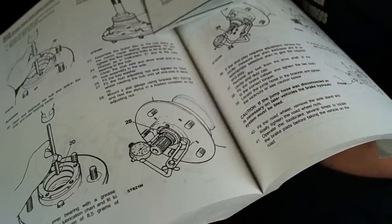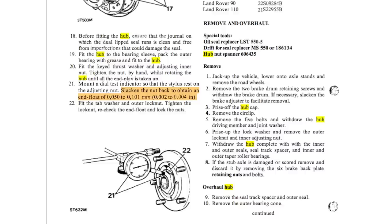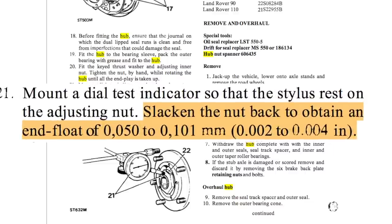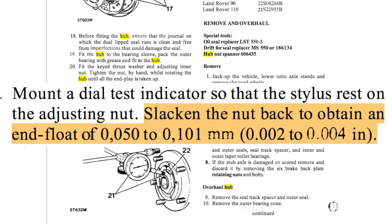What I'd like to make you aware of is the fact that there is development and things change for the ages. Item 21 says slacking back the nut to obtain an end float of 0.05 to 0.1 of a millimetre. Now this is on the older defenders.